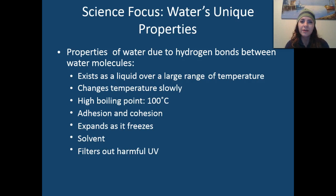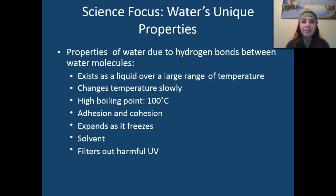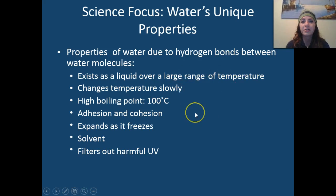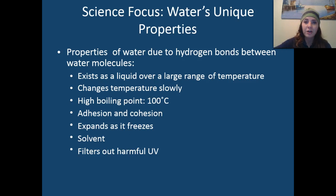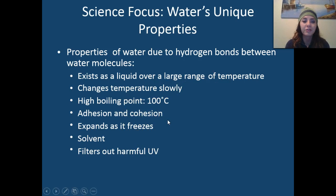Why is water so important? Water has very many unique properties. The number one property is probably that it's called the universal solvent — it's a polar molecule and many substances can be dissolved by water. Most of these properties are due to the hydrogen bonds that exist between water molecules. Water can exist in a liquid, solid, or gas. It changes temperature very slowly, so it has a very high heat capacity. It has a high boiling point, and it has forces such as adhesion and cohesion. Adhesion is like water sticking to the side of a glass, while cohesion is water sticking to other water molecules through hydrogen bonding. Water also expands as it freezes, and it filters out very harmful UV radiation.